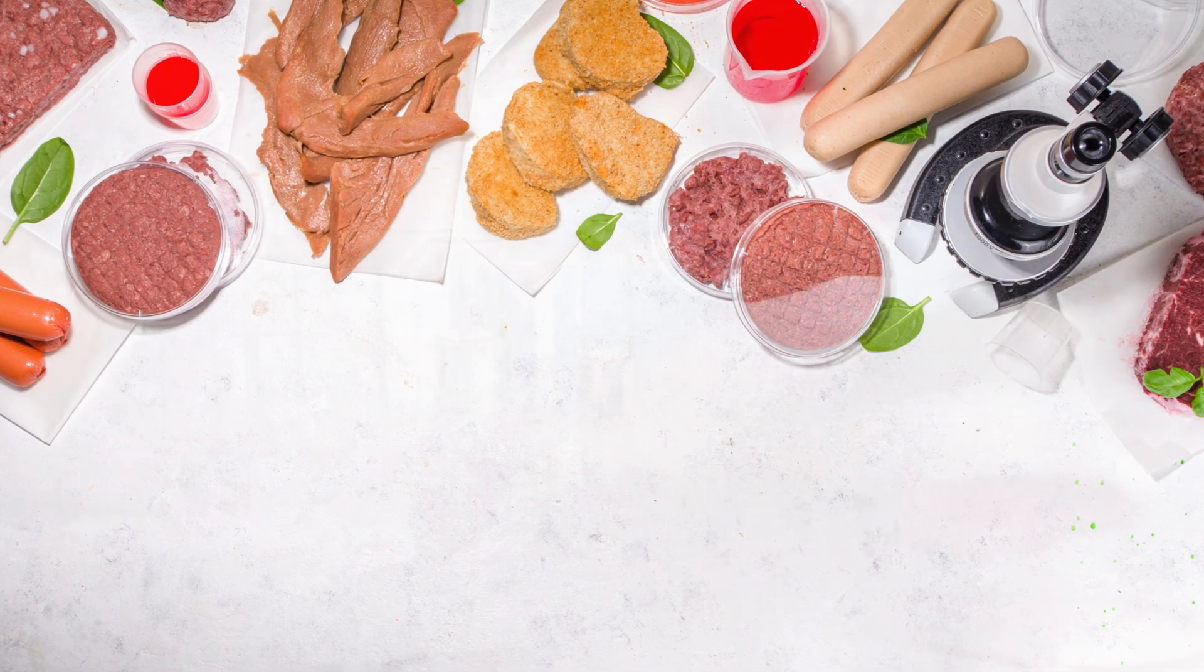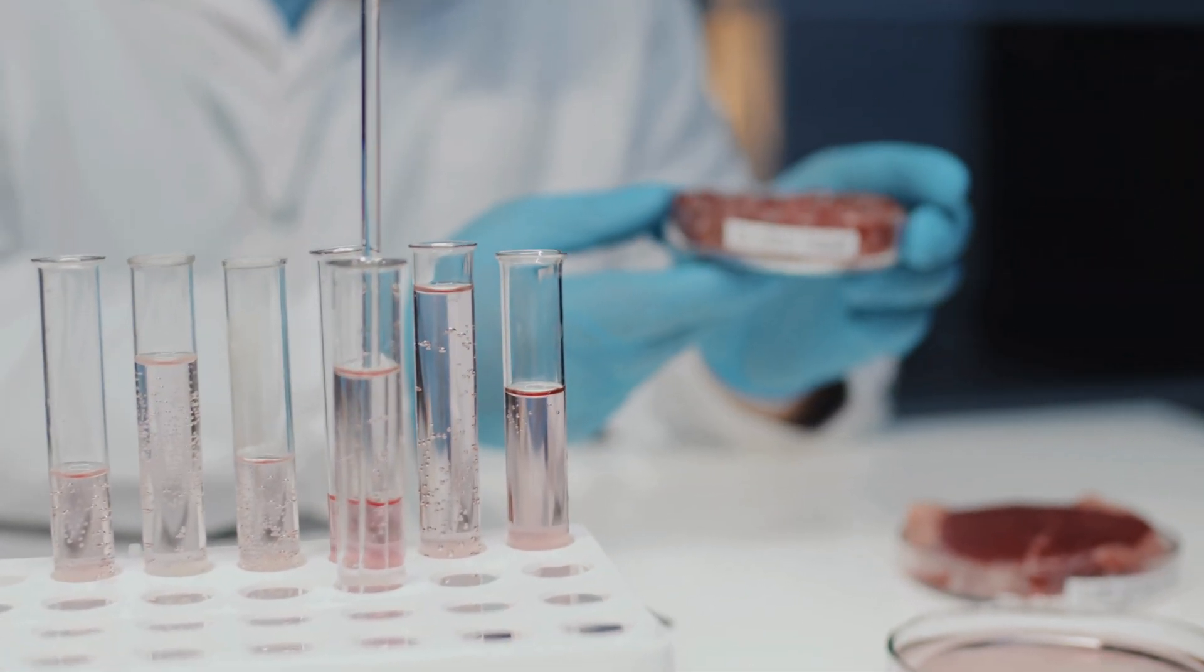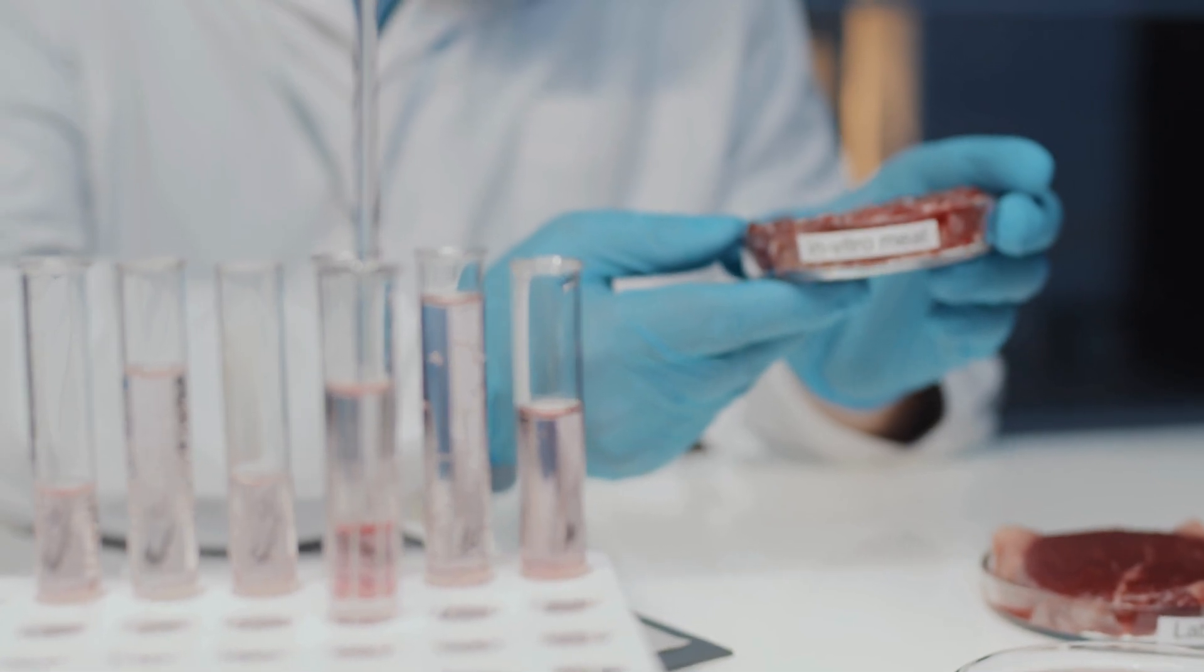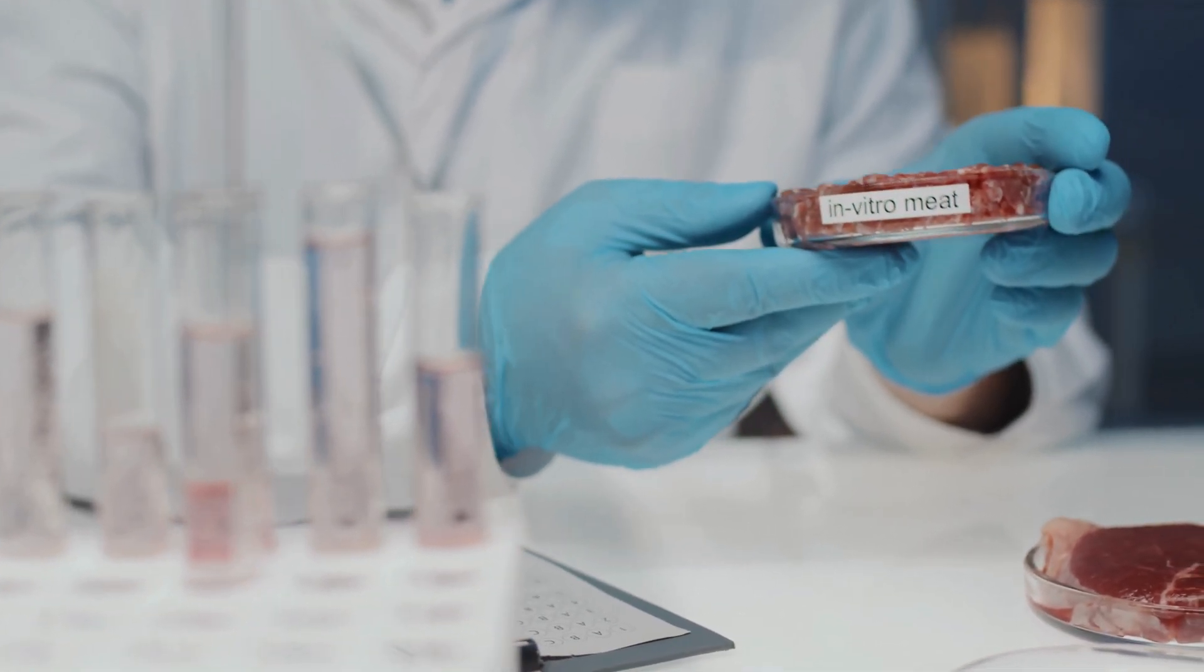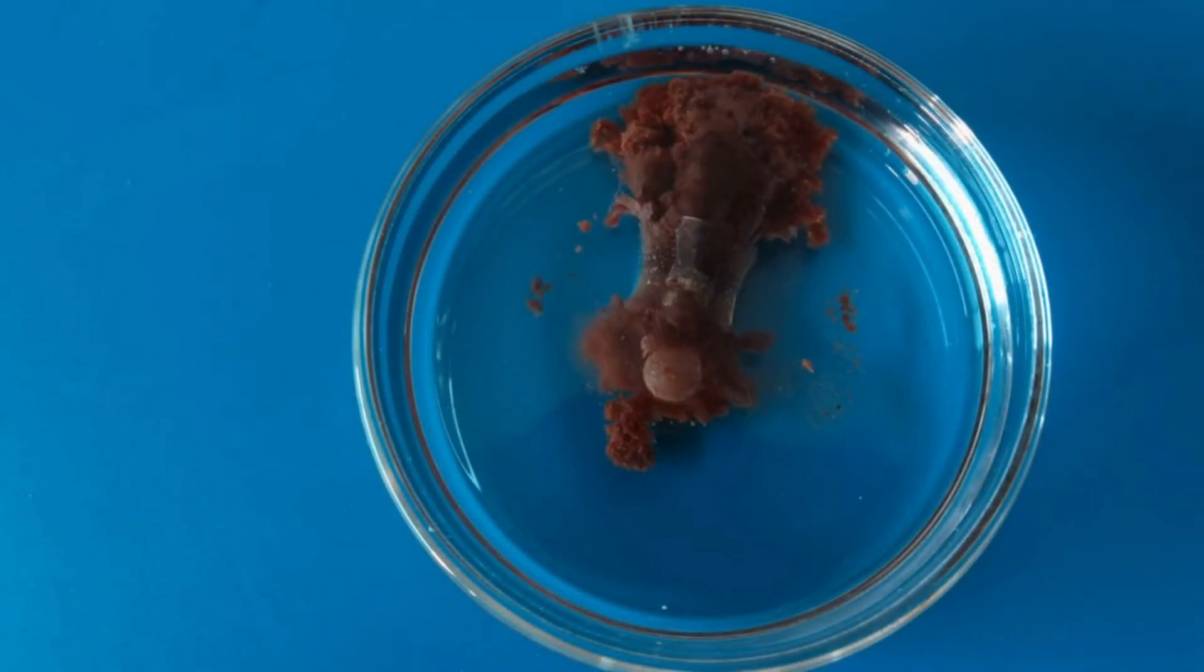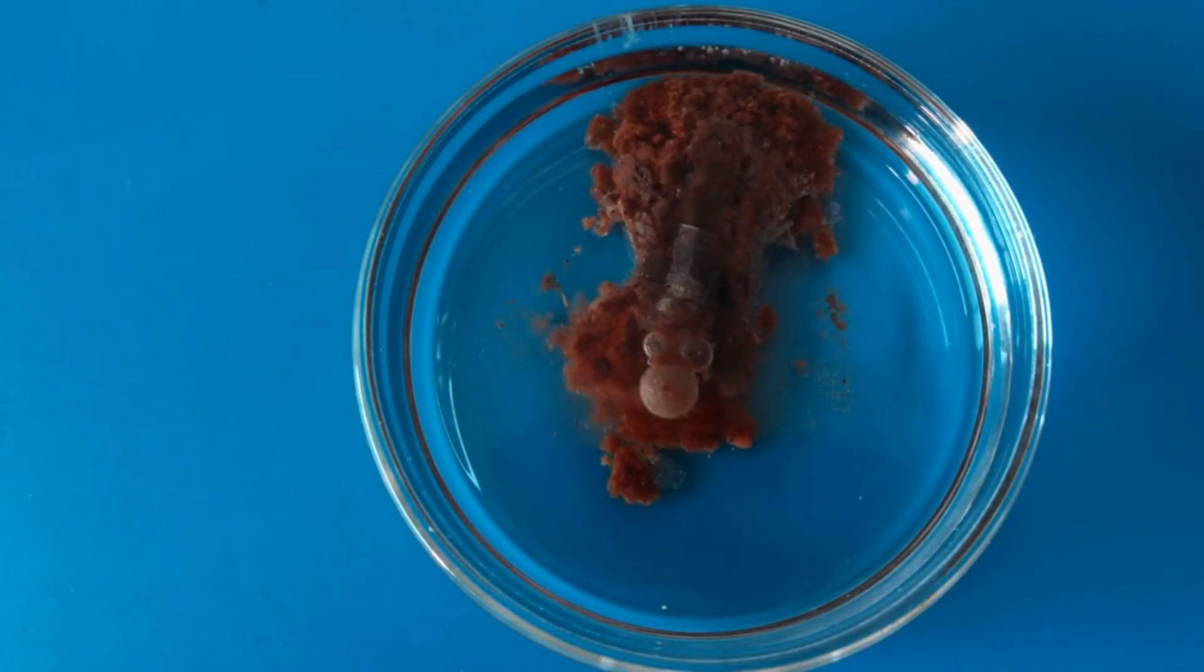What is lab-grown meat? Lab-grown meat, also known as cultured or cell-based meat, is produced by cultivating animal cells in a controlled lab environment. This innovative process allows us to create real meat without the need to raise and slaughter animals.